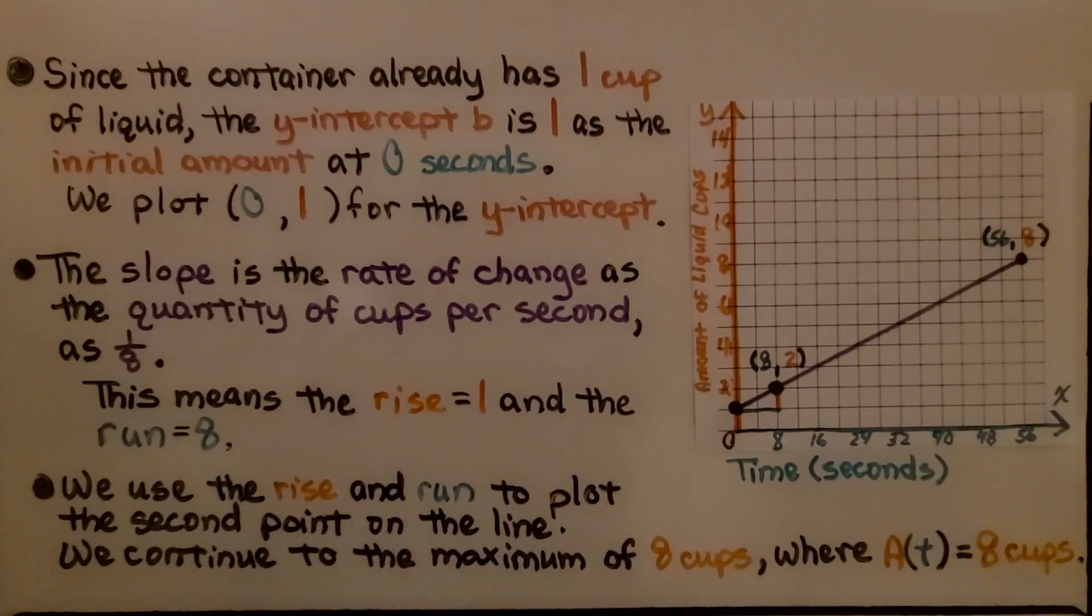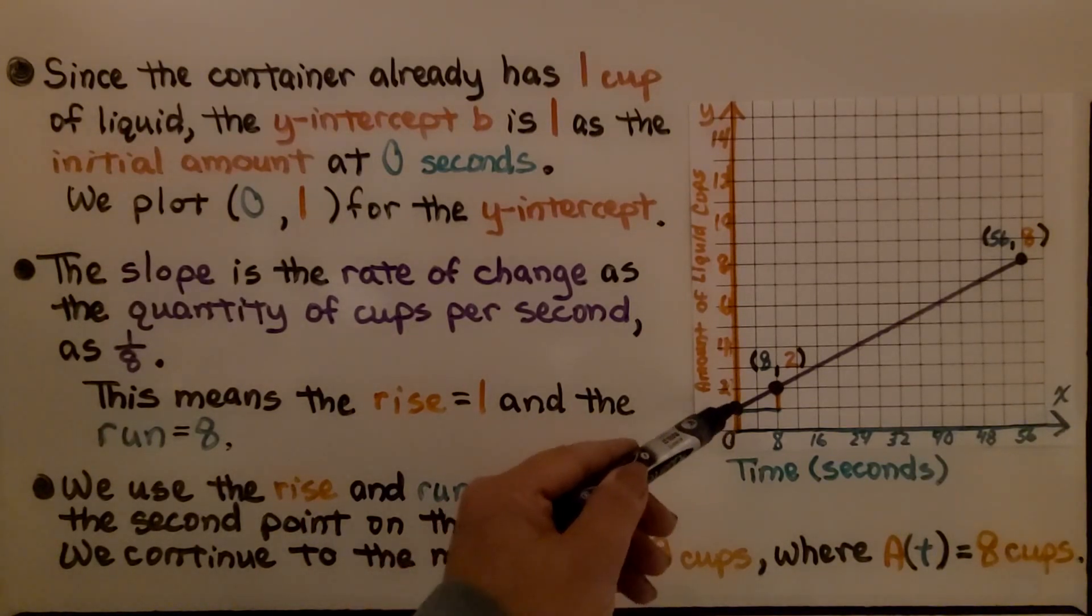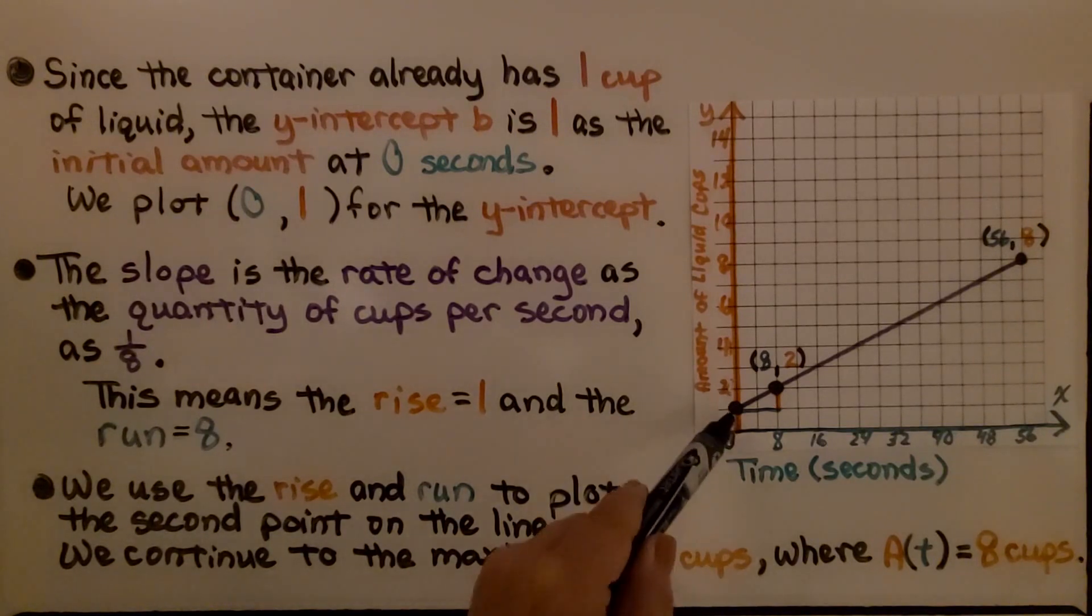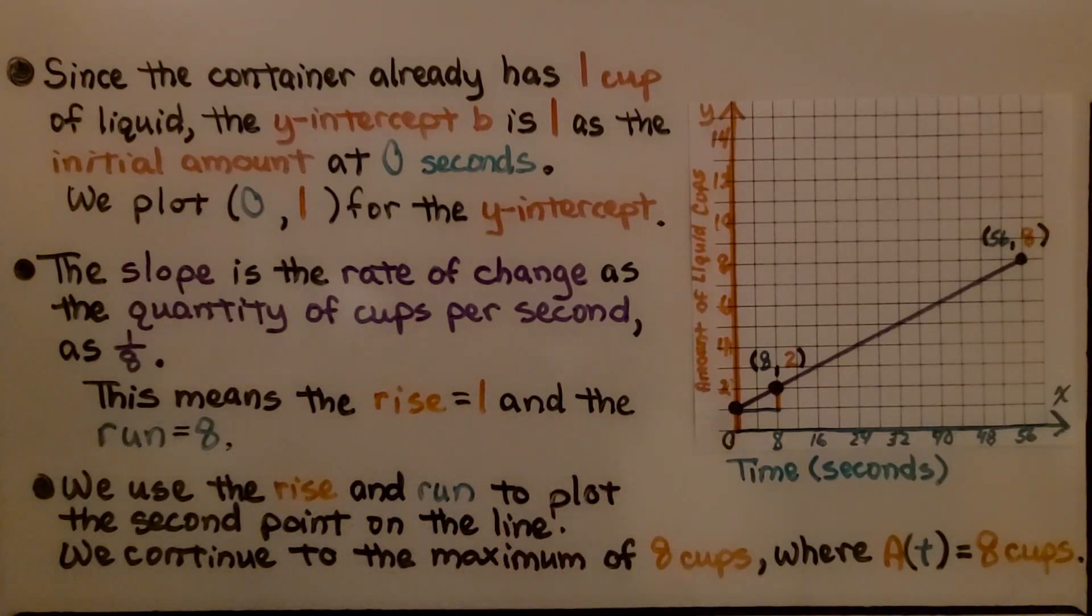Since the container already has 1 cup of liquid, the lemon juice, the y-intercept B is 1 as the initial amount at 0 seconds. It's where x is 0. We plot (0, 1) for the y-intercept.